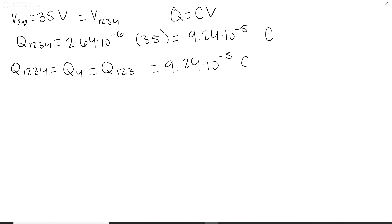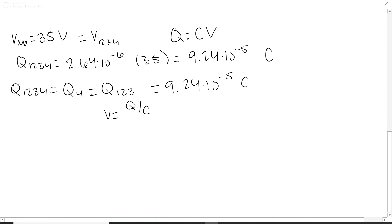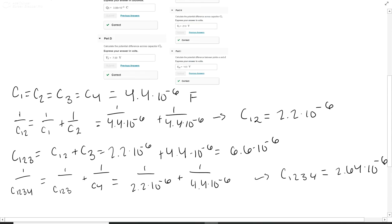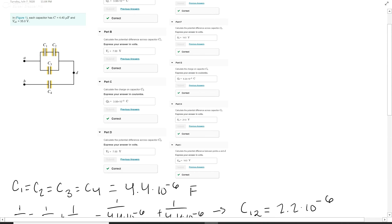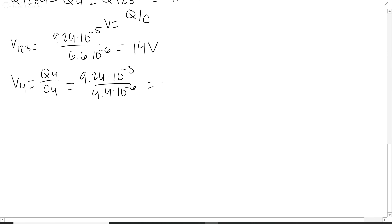Using Q equals CV rearranged to V equals Q over C: we know Q1,2,3 and C1,2,3 is 6.6×10⁻⁶, so V1,2,3 equals 9.24×10⁻⁵ over 6.6×10⁻⁶, which equals 14 volts — the voltage across that entire parallel section. For V4: V4 equals Q4 over C4 equals 9.24×10⁻⁵ over 4.4×10⁻⁶, which equals 21 volts.